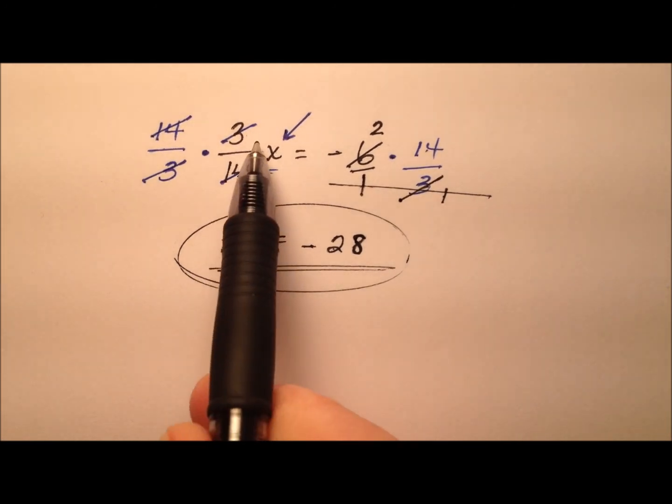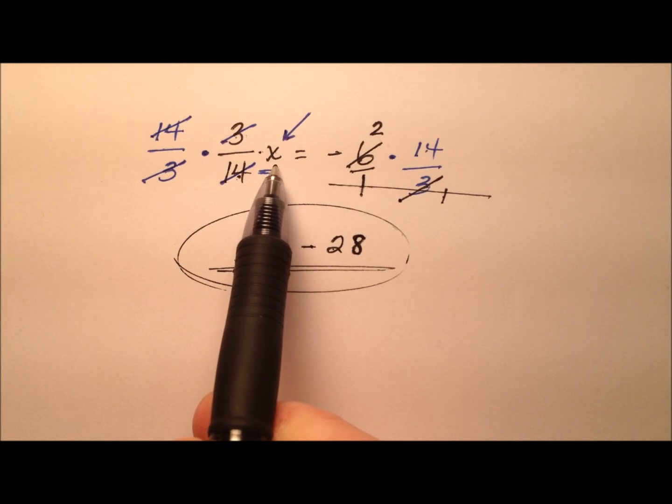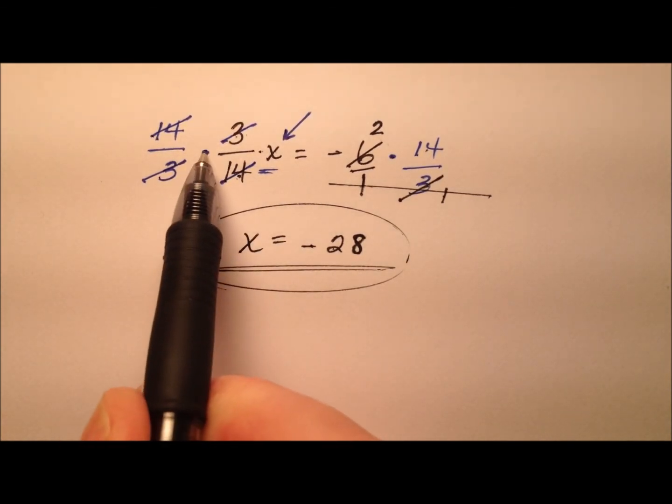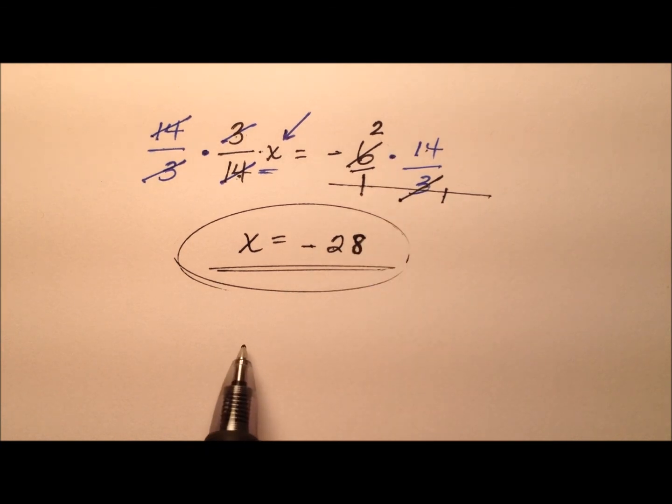So remember that when you have a fraction for a coefficient and you're trying to isolate the variable, consider multiplying it by the reciprocal, because that's the same as dividing. And so we went ahead and used the multiplication identity of equality to go ahead and get this done.